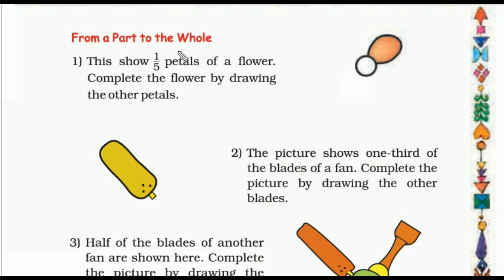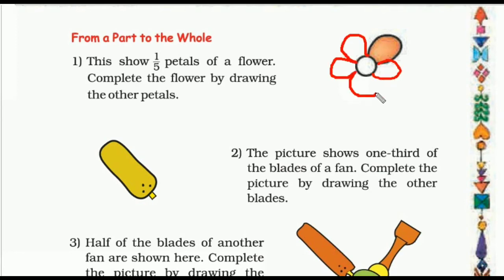Now the topic is 'from a part to the whole'. Question one: this shows one fifth of the petals of a flower. Complete the flower by drawing the other petals. That means one part is given out of five parts, so the remaining four parts we have to draw. That is why here, from part to the whole, we are finding out the whole. Like this we can complete the flower by drawing the other petals.